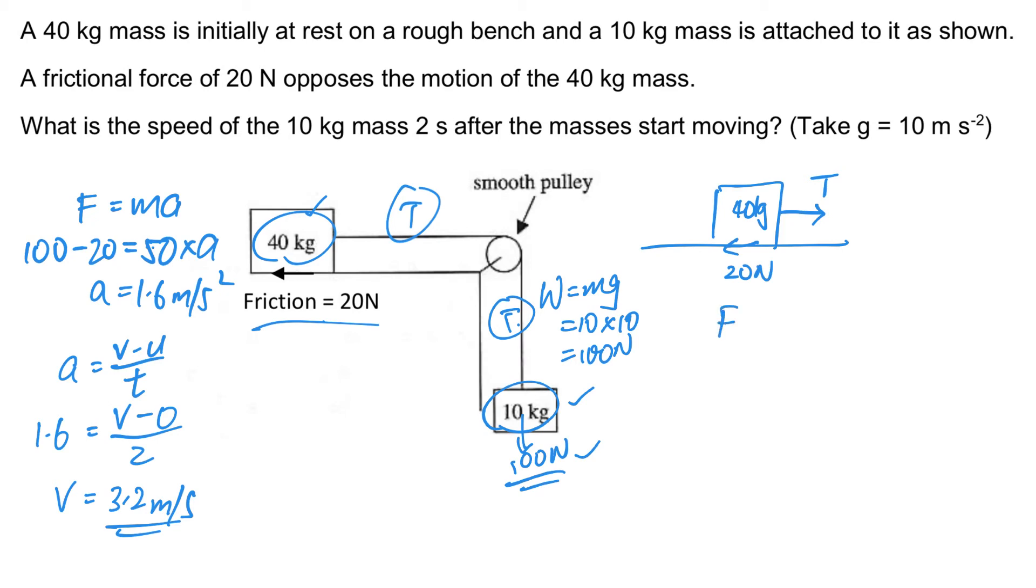Let's apply F equals MA. There are two forces acting on this box here. So the resultant will be T minus 20 equals the mass of the box, which is 40 kg, times the acceleration, which is 1.6 we found earlier. So from here I can find that T equals 84 newton. So that will be the answer.